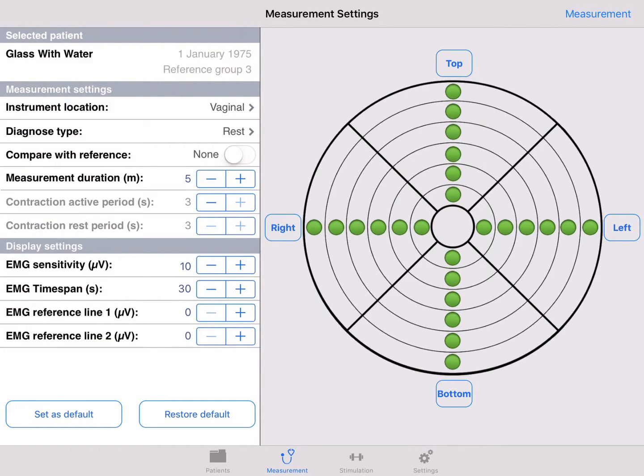I'll show you an MVC measurement compared to the healthy reference group. In the measurement settings screen, select diagnose type MVC. Select compare to reference group. Press measurement on the top right.